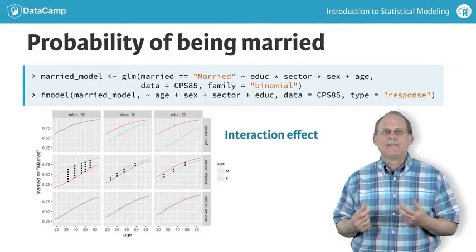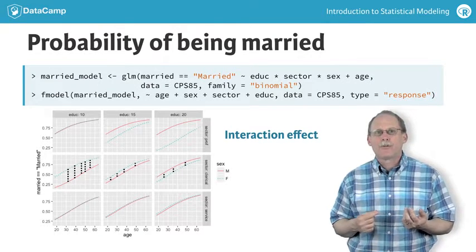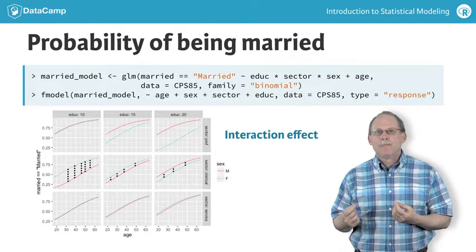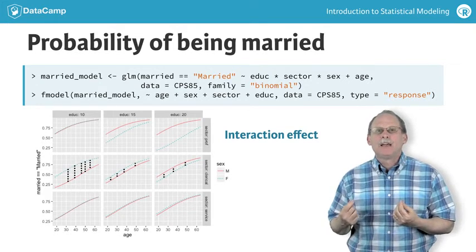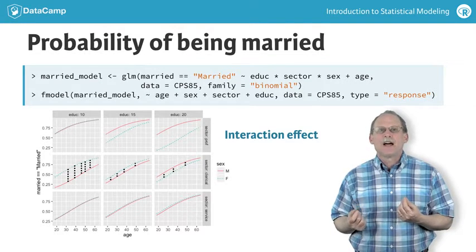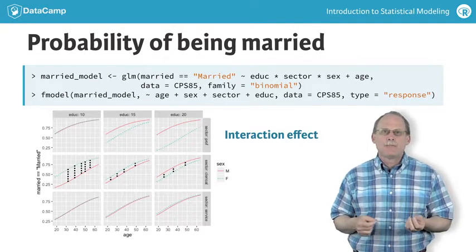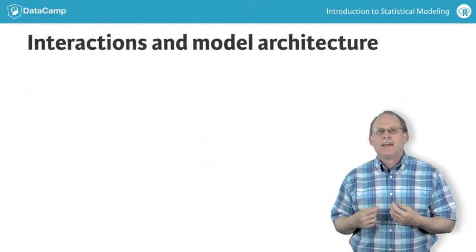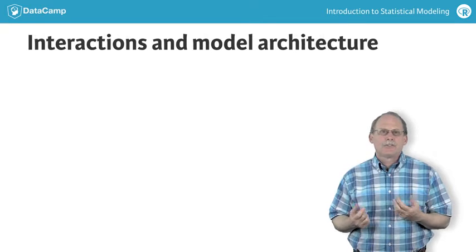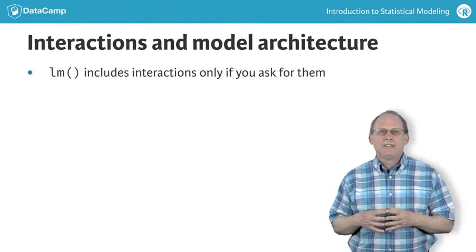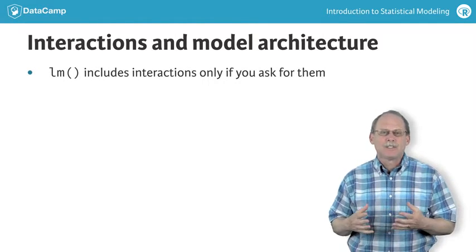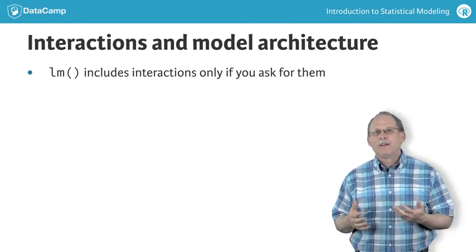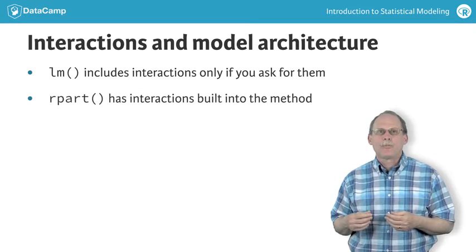It might seem obvious that the effect size of one explanatory variable might depend on the levels of other explanatory variables, but it's easy to get confused. Many people end up thinking that the interaction is how one explanatory variable shapes or causes another explanatory variable. In some model architectures, such as LM, you will only see an interaction effect if you ask specifically for it. In some other architectures, such as RPART, the interaction is just an ordinary part of the story.